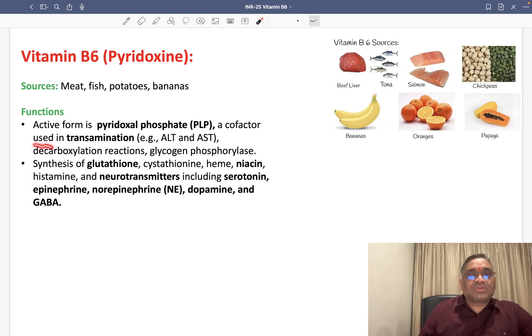They will be a cofactor which will be used in three important reactions: number one is transamination, number two is decarboxylation, and number three is glycogen phosphorylase. Their function is for synthesis of glutathione, cystathione, and heme.